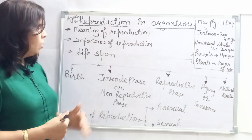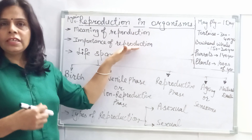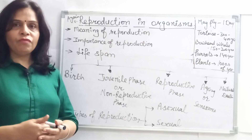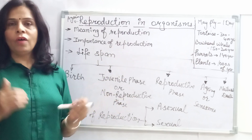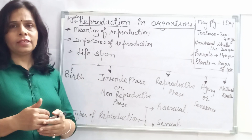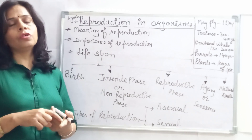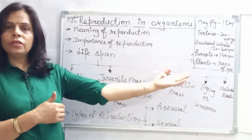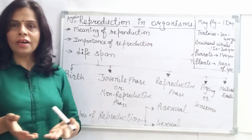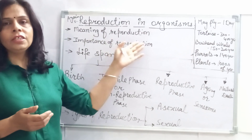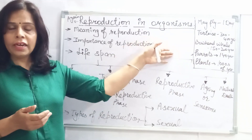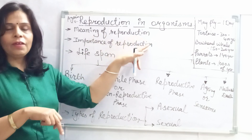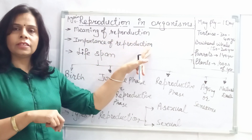There is a question in everybody's mind: what is the importance of reproduction? If there is no reproduction, there is no life. All living organisms are born and eventually die. If no new organisms are formed, one day life will vanish from this earth. So reproduction is important to continue life on earth and to continue the species. It is not essential for an individual's life, but it is very important for the continuation of species.